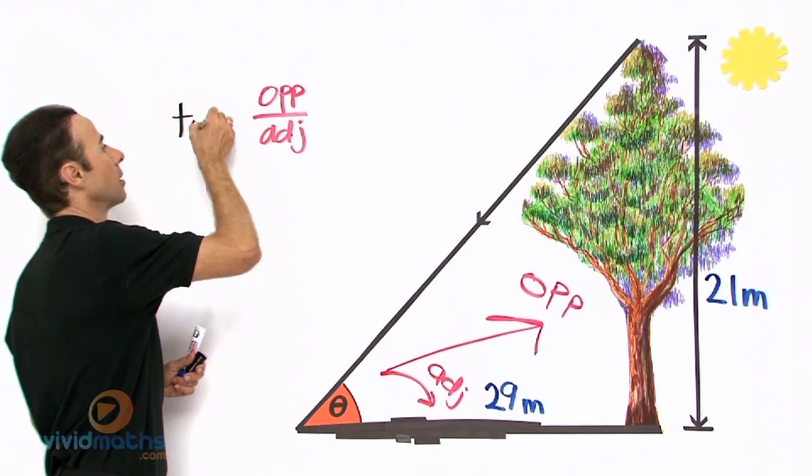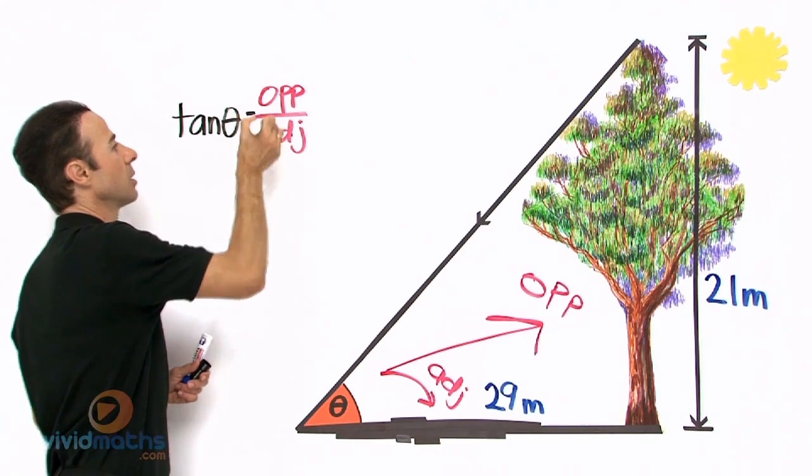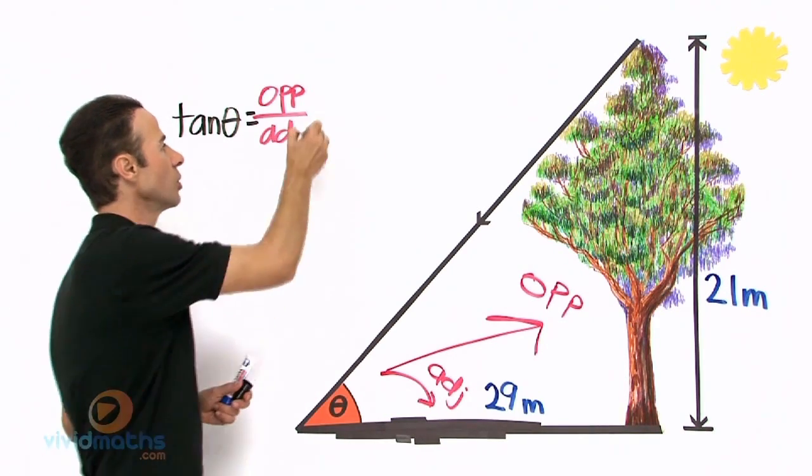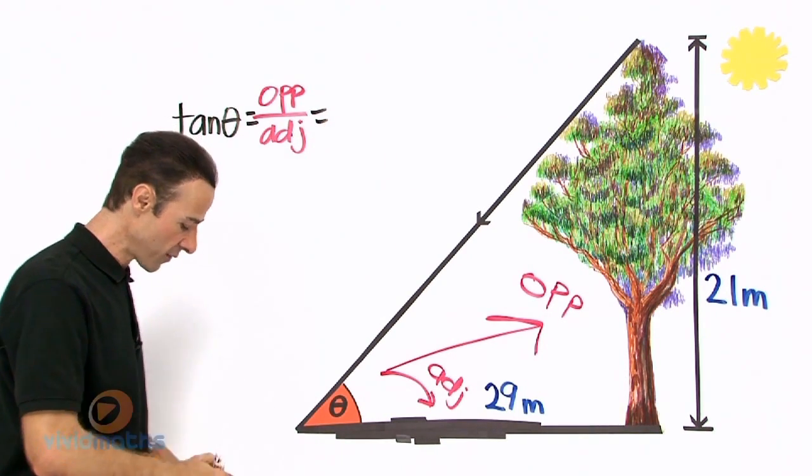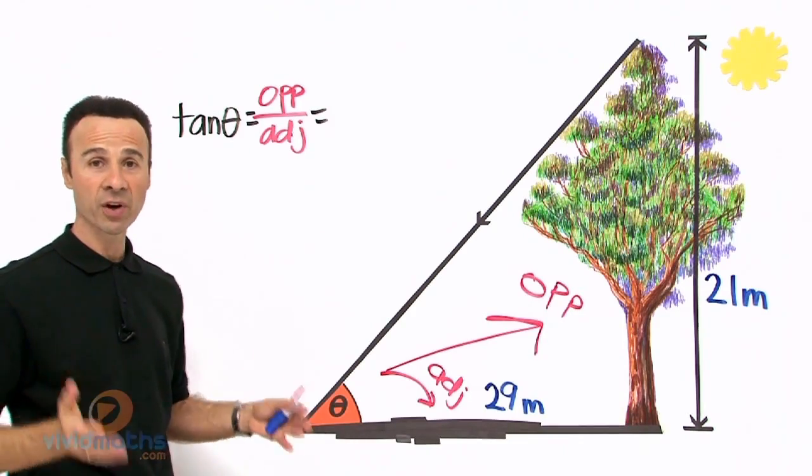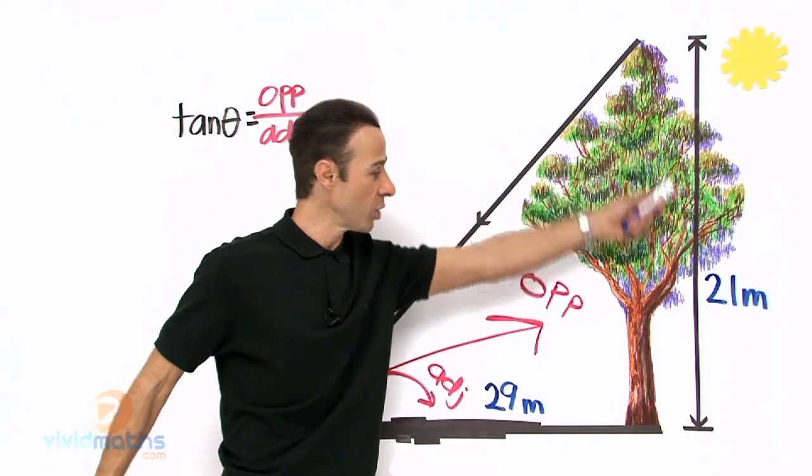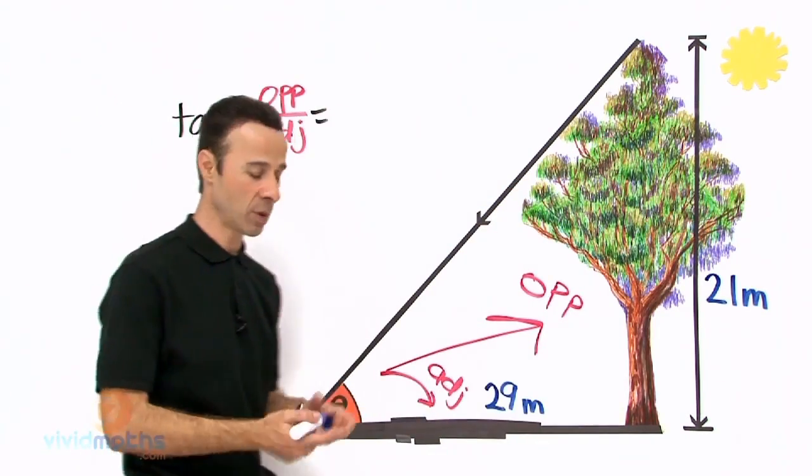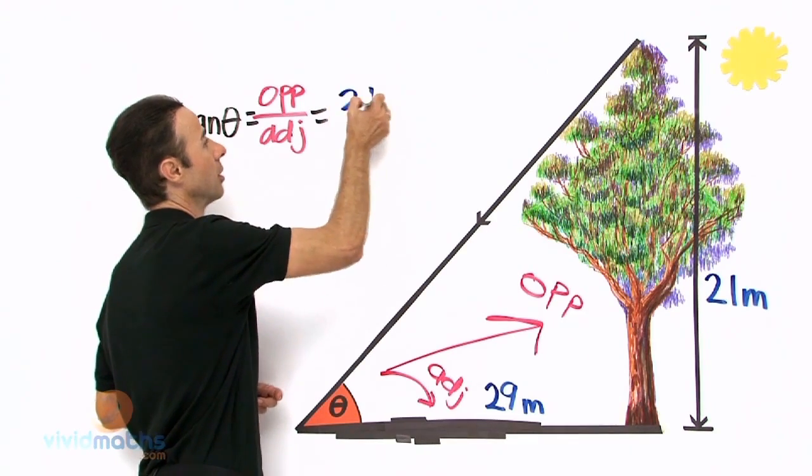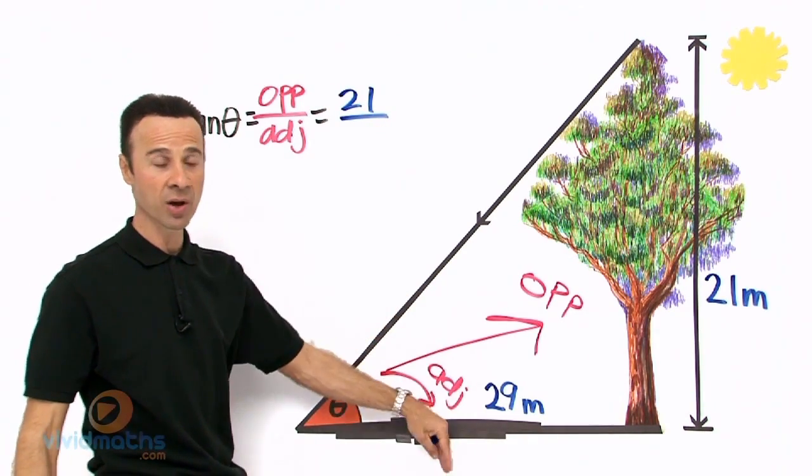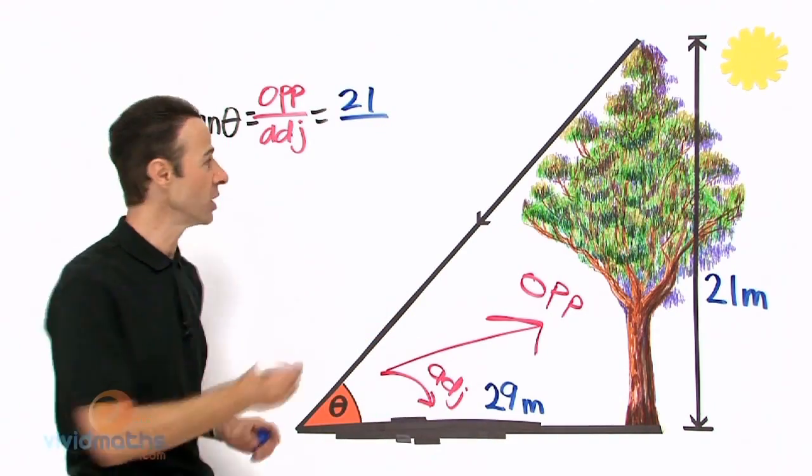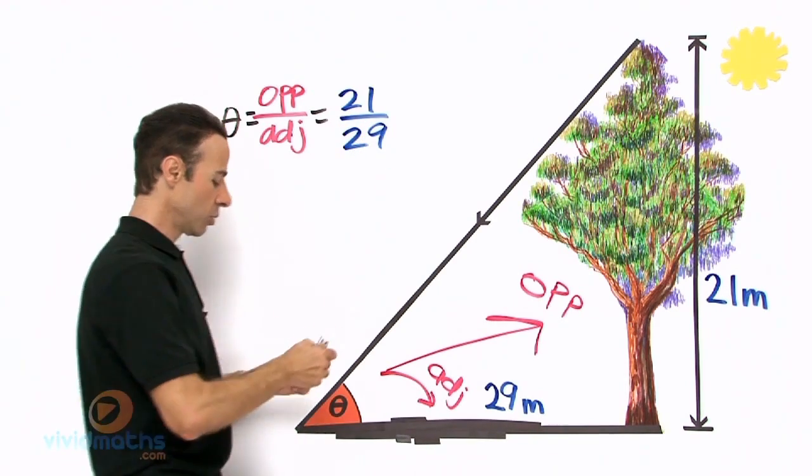So tan theta equals opposite over adjacent, which equals what numbers do we have? You ask that question again, what have I got? Looking at the diagram, I have the opposite right across here 21 meters, let us put that in, all over adjacent right down here on the shadow, 29 meters.